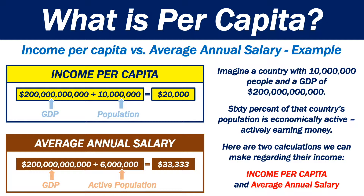Let's first look at income per capita. We divide the total GDP by the population, which gives us a value of 20,000. The income per capita is 20,000.